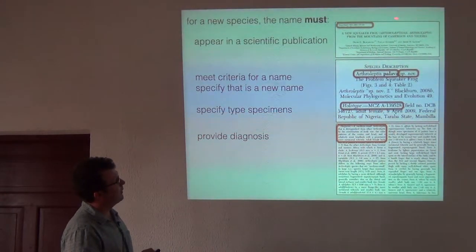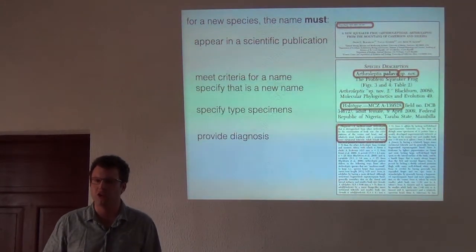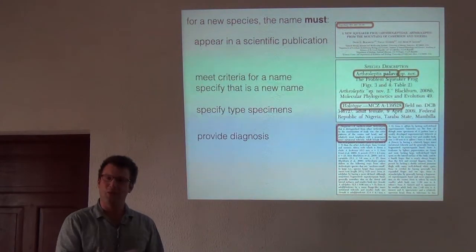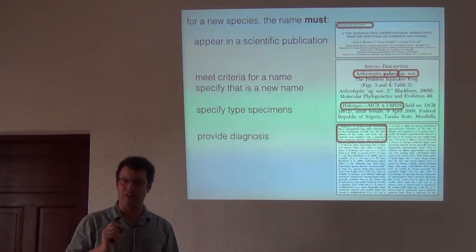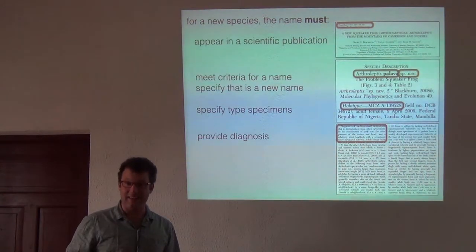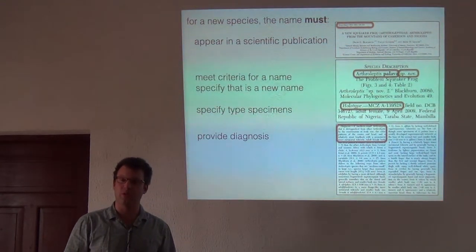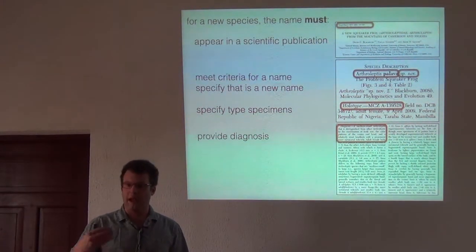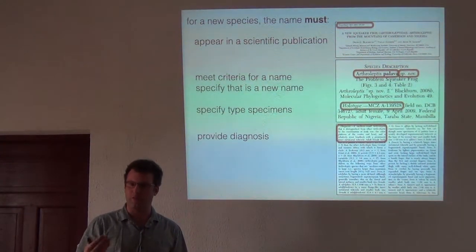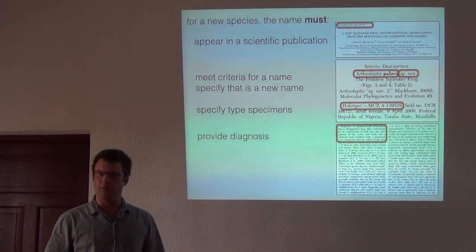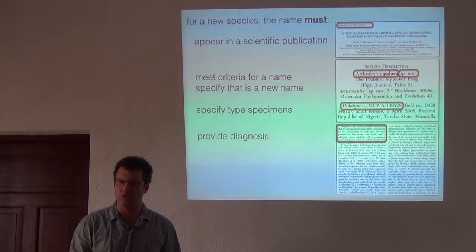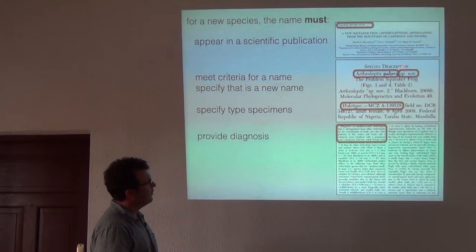Here is a paper where we described a new species from Cameroon and Nigeria, published in the journal Herpetologica, which focuses on amphibians and reptiles. This is Arthroleptis palava, which is a noun in apposition — you specify in the description that it's a noun, so I didn't have to Latinize it. I've done this with local language names; for instance, we've named things from Mount Oku in the local language Oku, to have a local connection with our species diversity.